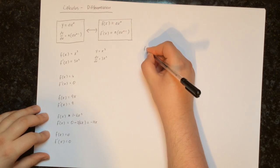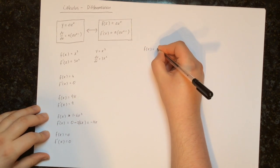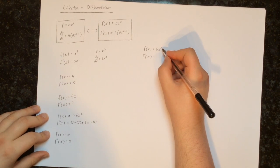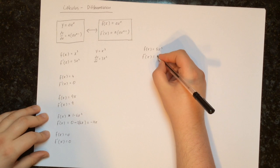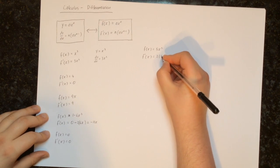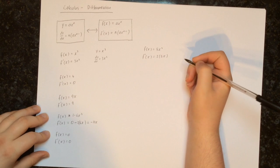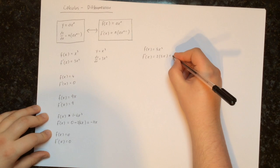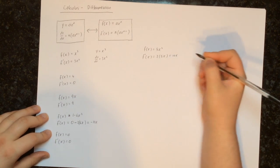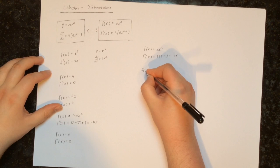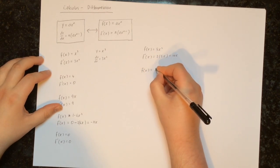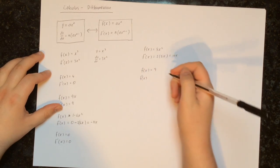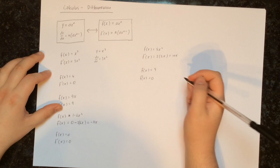Next, let's try differentiating f of x equals 5x squared. We find the derivative by multiplying by the power — that's 2 — and reducing the power by 1. So 2 times 5x gives us 10x. Next, f of x equals 9. Since 9 is just a constant, the derivative f dash of x is 0.